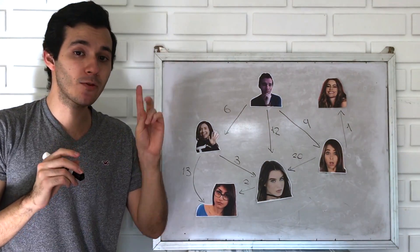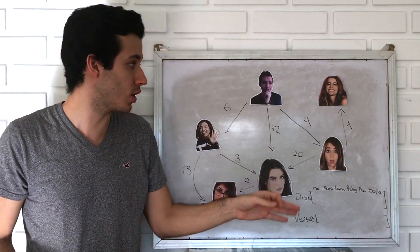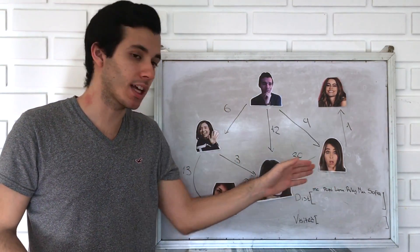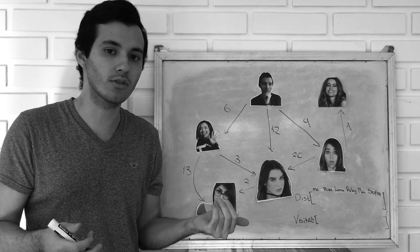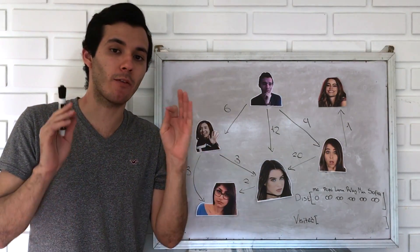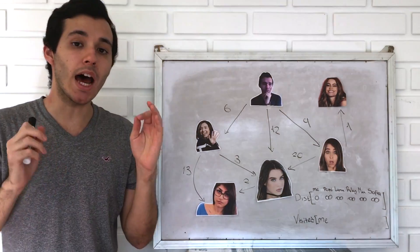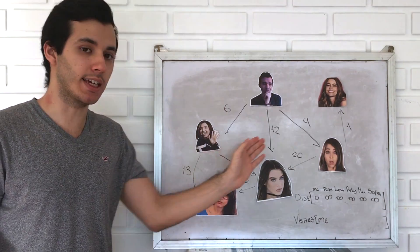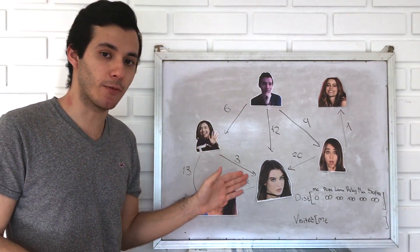This is how it works. We have two sets. The first one keeps track of the shortest path between my house and all my girlfriends' houses. We initialize all of them as infinity, except mine which we initialize as zero — because from my house to my house, it's zero. The other set keeps track of all the houses we have visited so far. So we start with me and mark myself as visited.